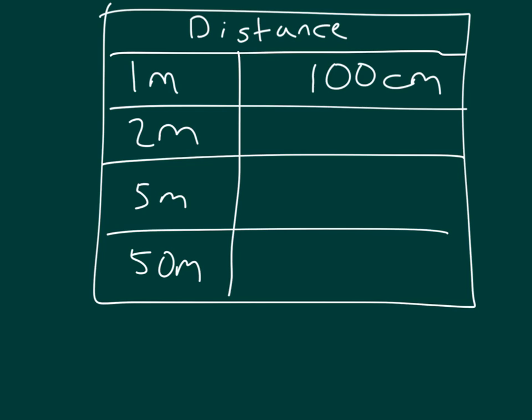One last little piece of information here. I'm going to show you 1 meter equals 100 centimeters. If that's the case, 2 meters equals how many centimeters? Right, 200 centimeters. If we had 5 meters, how many centimeters would it equal? 500 centimeters.